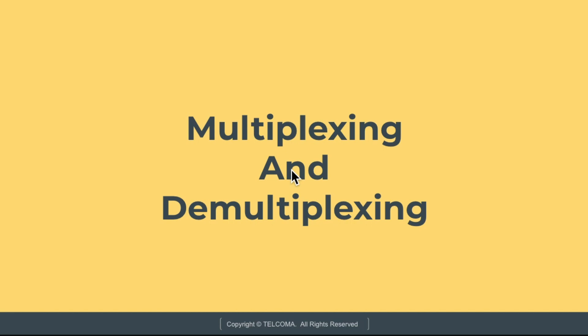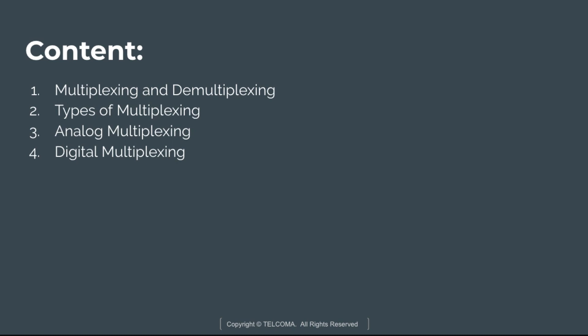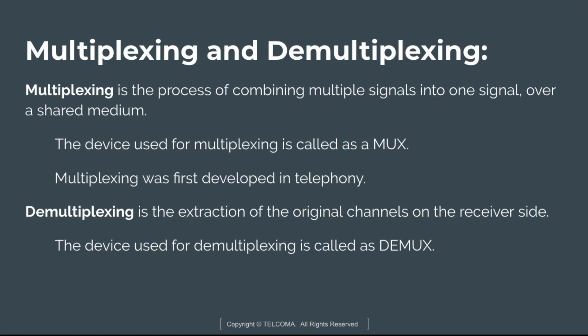Hello, welcome to the course of computer networks. Today we are going to discuss about multiplexing and demultiplexing. We will discuss what is multiplexing and demultiplexing, and the types of multiplexing — that is analog multiplexing and digital multiplexing.